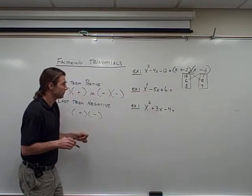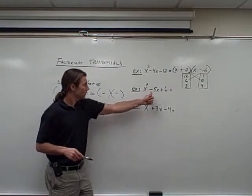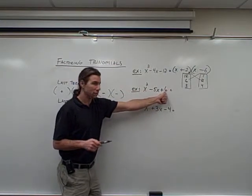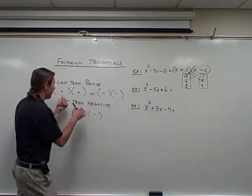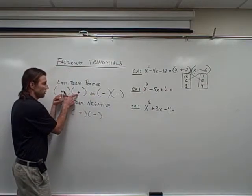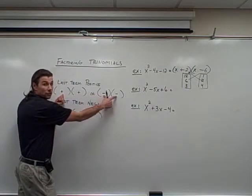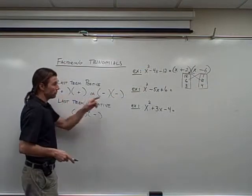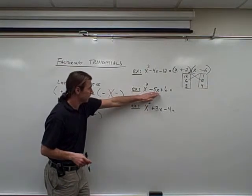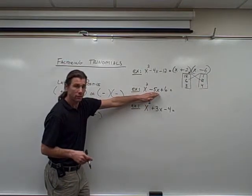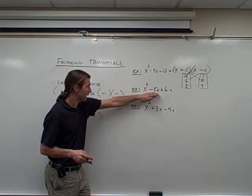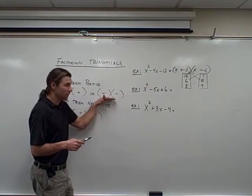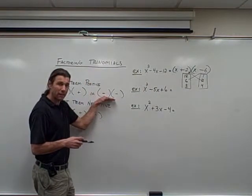Next example. I look at the last term — it's positive, so I either have to choose plus-plus or minus-minus. Looking at the middle term, it's negative. Since the middle term is negative and I want to add to make negatives, I better choose minus-minus.